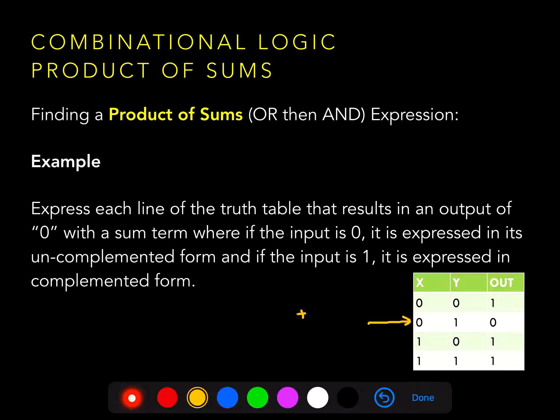And if the variable appears as a zero, we'll express it in its uncomplemented form. And if it occurs as a one, we'll express it in its complemented form. In this example, we have only one term, so the output is just that one term expressed in product of sums format.